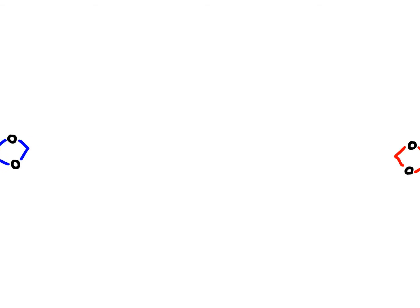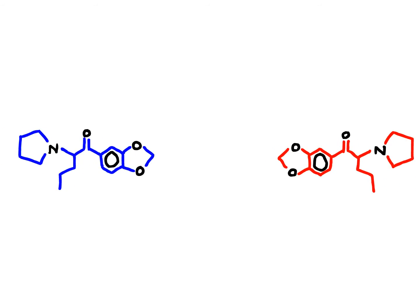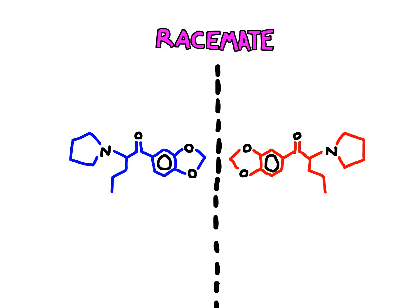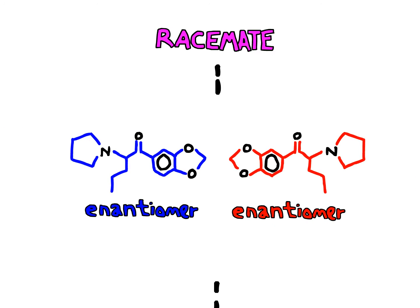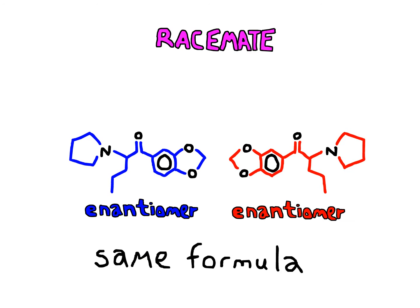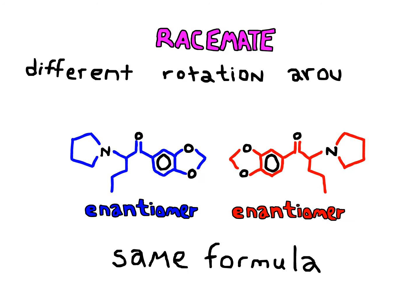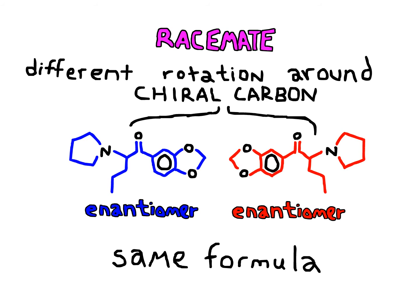Chiral column chromatography. This is methylene deoxypyrovalerone, or MDPV. This drug is a racemate consisting of two separate enantiomers that have the same chemical formula but a different rotation around the chiral carbon.